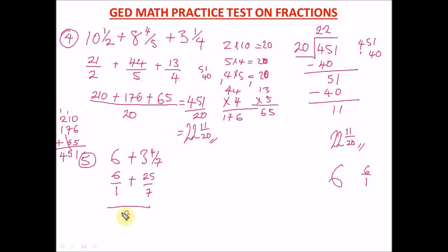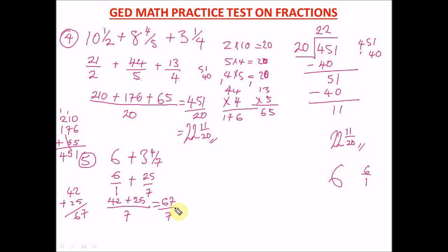The LCM of 1 and 7 is simply 7. How many times does 1 go into 7? Seven times. So 7 × 6 = 42. How many times does 7 go into 7? Once. So 1 × 25 = 25. Adding: 42 + 25 = 67. We have 67 over 7.